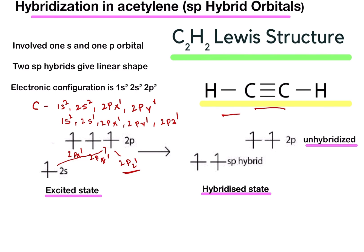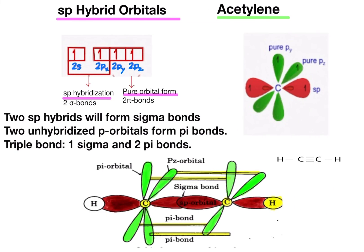Each carbon atom undergoes sp hybridization by using one 2s and one 2p orbital in the excited state to give two half-filled sp hybrid orbitals, which are arranged linearly. The structure has 2s1 and 2px forming the sp hybridization. The two carbon atoms form a sigma sp-sp bond with each other by using sp orbitals.